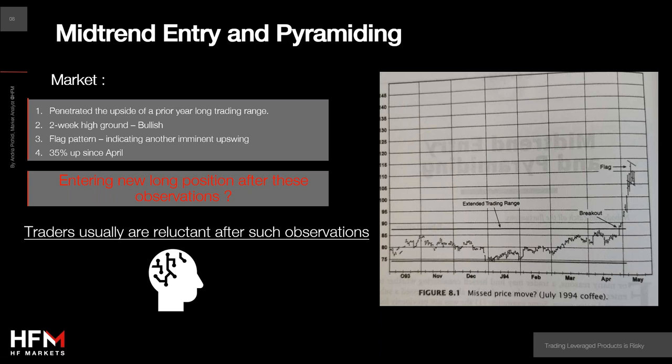We can see it was moving sideways and then had a sharp price advance at the end of April and up to mid-May. Consider a trader back in 1994 examining the coffee market after missing or not participating in this jump.